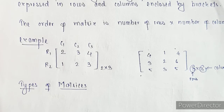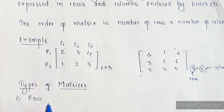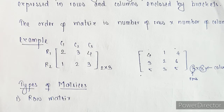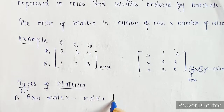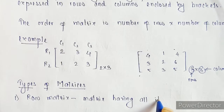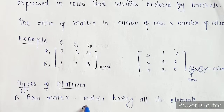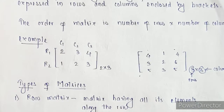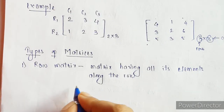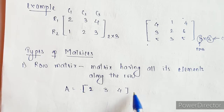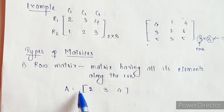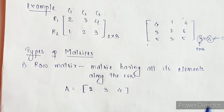Next are types of matrices. The first type is a row matrix. In a row matrix, all the elements are arranged along the row. For example, in matrix A, all the elements are arranged along the first row. Even though we have three columns, there is only one row. That is why it is called a row matrix.